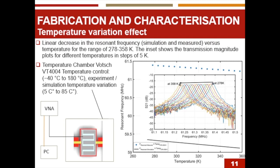Fabrication and characterization: temperature variation effect. As we said, the temperature effect on the resonator was done via ovenization effect. Mainly the resonator was placed in the oven, which is called the temperature chamber Votsch VT4004, which has a temperature control from minus 40 to 180 Celsius. In our experiment here, we applied from 5 Celsius to 85 Celsius. So we just placed the resonator inside the oven and we connected the sense to the VNA, the vector network analyzer, which is connected to the PC to record the effect on the temperature and frequency.